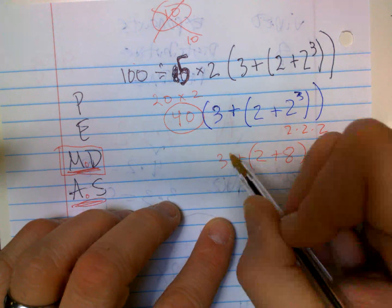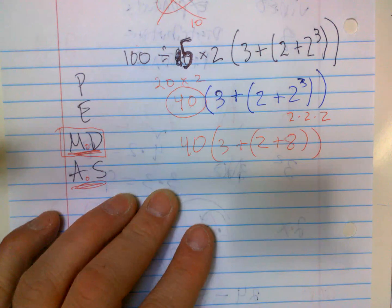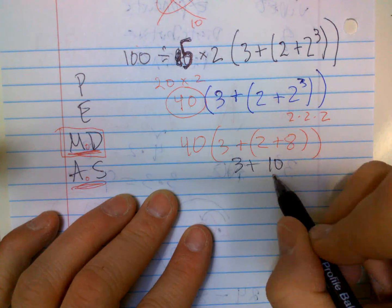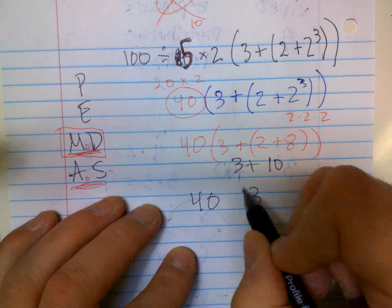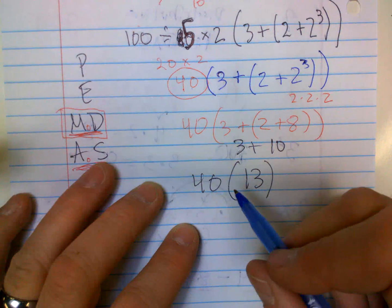And then I got a plus 3 out here, then a 40. Now I can do 2 plus 8 is 10. 3 plus 10 is 13.